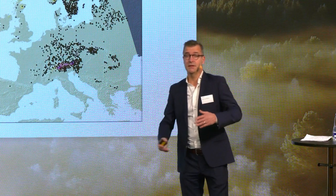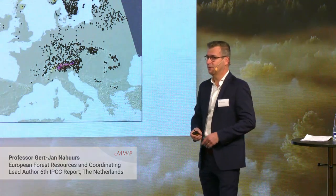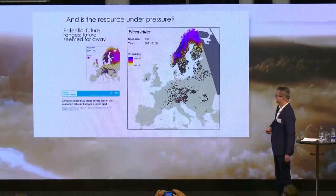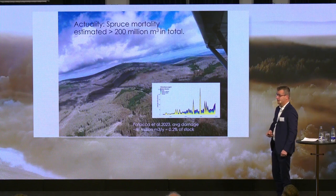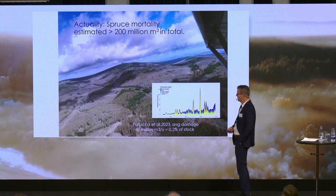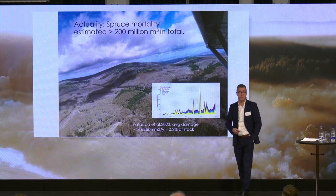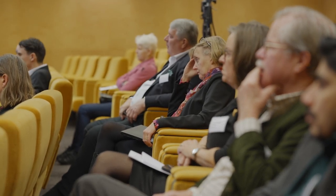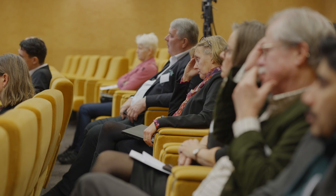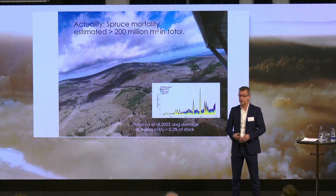The models placed concerning scenarios at 2070 to 2100, far away — let's not get too worried about that yet. But the actuality came much faster. This is the spruce mortality in Germany, in the Harz. All the brown is dead spruce. The spruce gets affected by drought and heat in hot summers and is very vulnerable to bark beetle. The spruce mortality is already over 200 million cubic meters, which is an unprecedented kind of mortality in Europe.